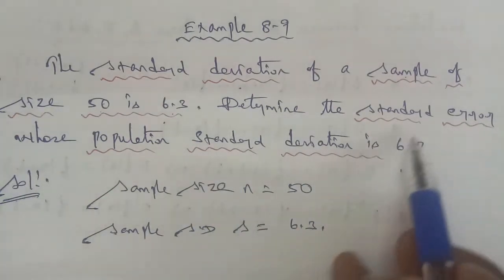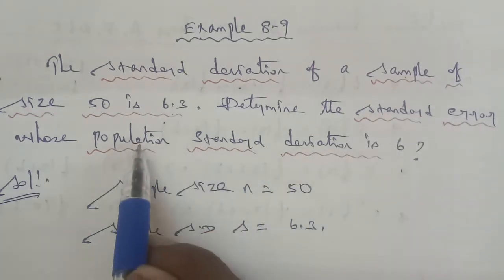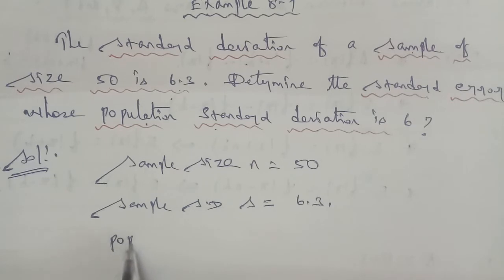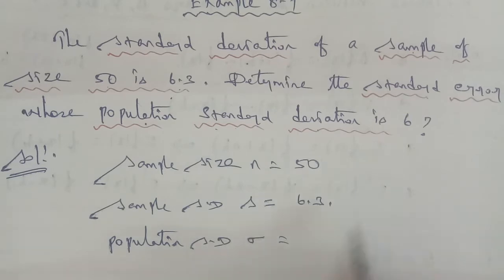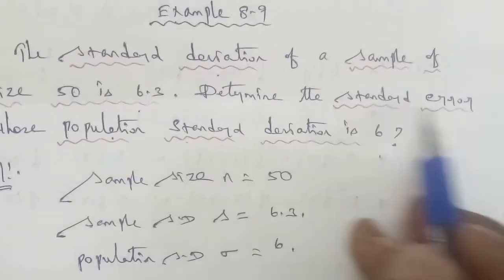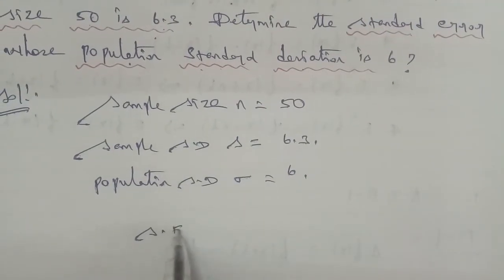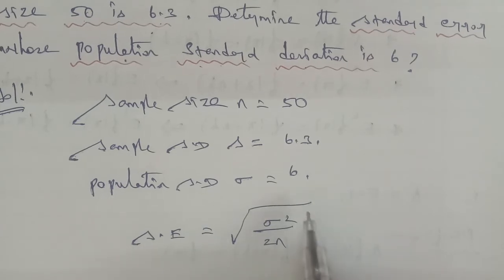To find the standard error, we use the population standard deviation. The population standard deviation notation is sigma, which equals 6. The question asks to determine standard error, so the standard error formula is equal to square root of sigma squared by 2n.